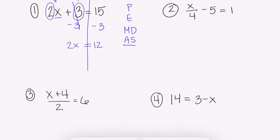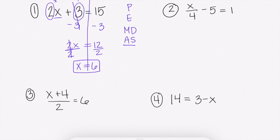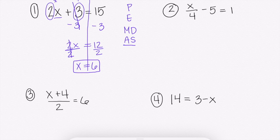Now I'm not done, because there is still a number with my x. This is just like my one-step problems — we have 2 times x. To get rid of times 2, we're going to divide by 2. 2 divided by 2 gives me 1x, which is just x. Do that to both sides: 12 divided by 2 gives me 6. Just like one-step equations, you can guarantee 100% on your next test because every equation you can check — plug in what you think x is and see if it works.